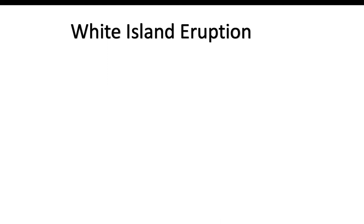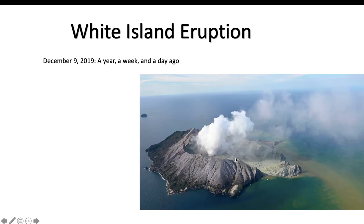The next one is the White Island eruption, which happened in New Zealand on December 9, 2019. There were 47 people on a cruise ship who went as a summer excursion to the island. Twenty-two people died, and the rest got seriously injured from the volcano.